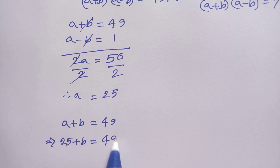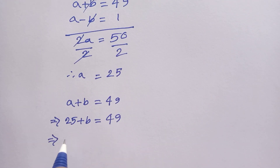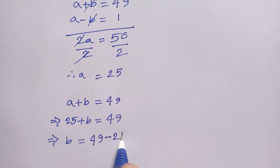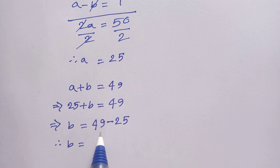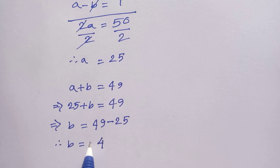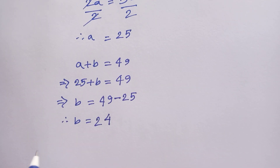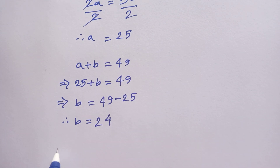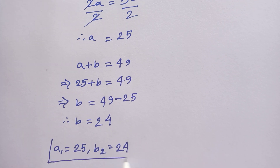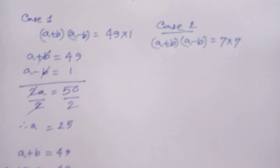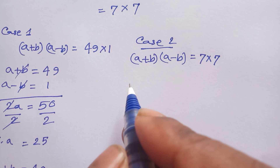Substituting a equals 25: 25 plus b equals 49, so b equals 49 minus 25, therefore b equals 24. So when a₁ equals 25, then b₁ equals 24. This is the first solution.